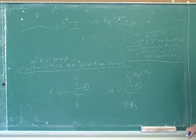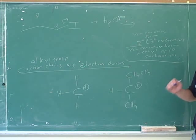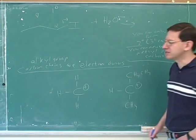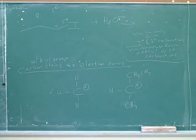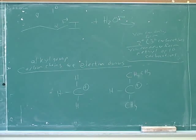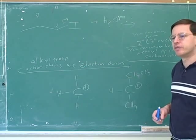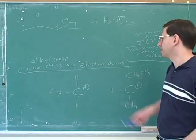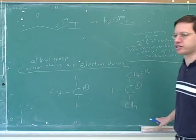We learned a lot of very important things here. The big obstacle to SN1 is stabilizing the carbocation. The big obstacle to SN2 is steric hindrance that blocks the nucleophile. If we memorize those two slogans, they explain almost all the other facts about SN1 and SN2. How do you stabilize a carbocation? The most important way is by substituting it with alkyl groups, because alkyl groups are electron donors.